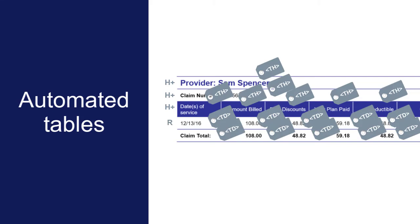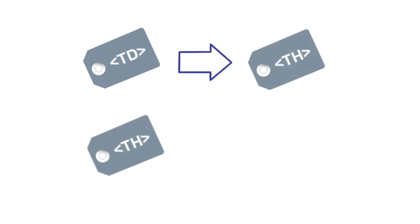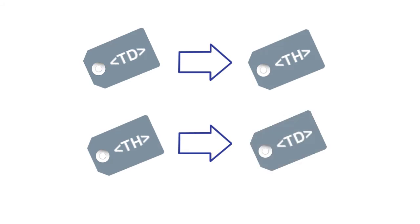If the default table cell type reflects the way that you want the table to be read, then you don't need to do anything. However, if you want accessibility tools to read a table data cell in a simple table as a header, or to read a table header in an automated table as a data cell, you can change the table cell type.